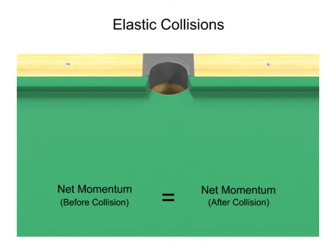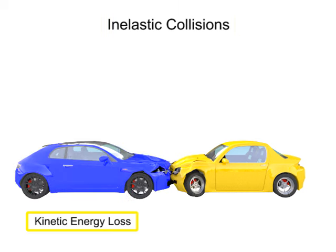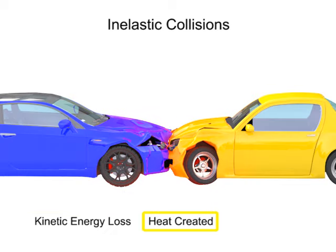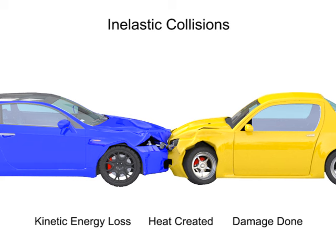The second type of collision is an inelastic collision. In an inelastic collision, momentum is still conserved, but kinetic energy is lost in the system, resulting in the creation of heat and damage done to the colliding bodies. Bodies involved in an inelastic collision end up entangled with each other or stuck together.